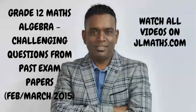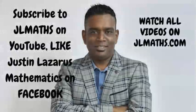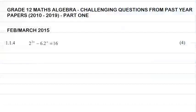Hi guys, welcome to another video. In today's video lesson we're going to be looking at Grade 12 maths algebra challenging questions from past papers from 2010 to 2019. This is going to be part one of a series of videos. Let's look at the first question, which is the February/March 2015 paper, question 1.1.4: 2 to the power 2x minus 6 times 2 to the x equals 16.